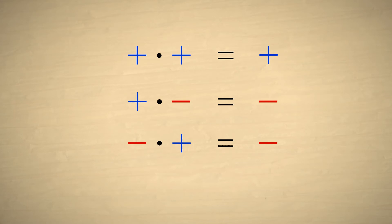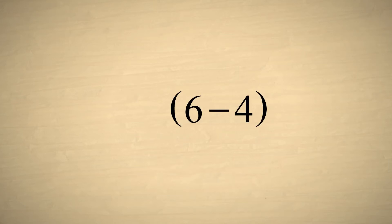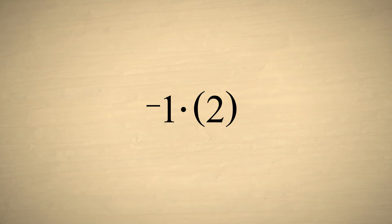But what if both operands are negative? If two negative numbers are multiplied, should the product be positive or negative? Let's try it both ways and see what happens. Let's multiply 6 minus 4 times negative 1. We know what the answer should be: 6 minus 4 is 2, and we have already shown that the product of a negative and positive number must be negative. So the answer must be negative 2.